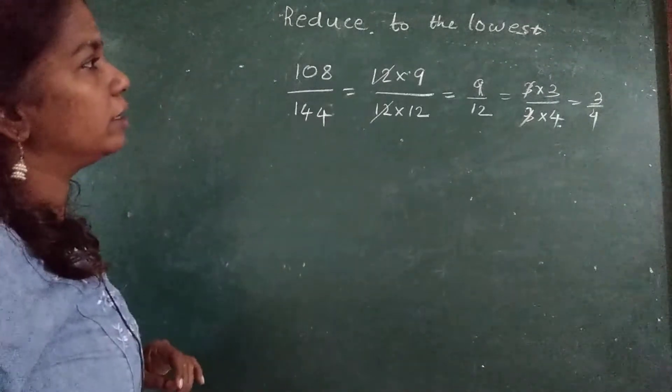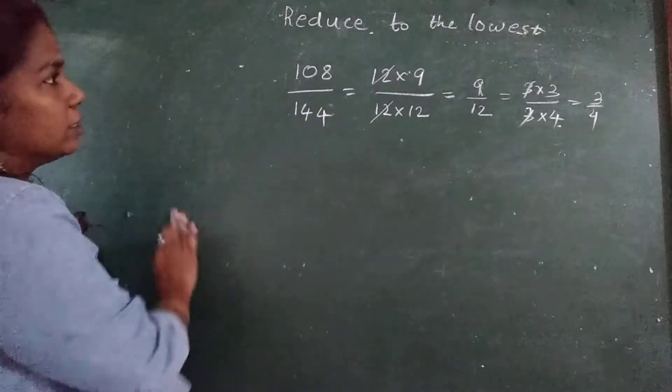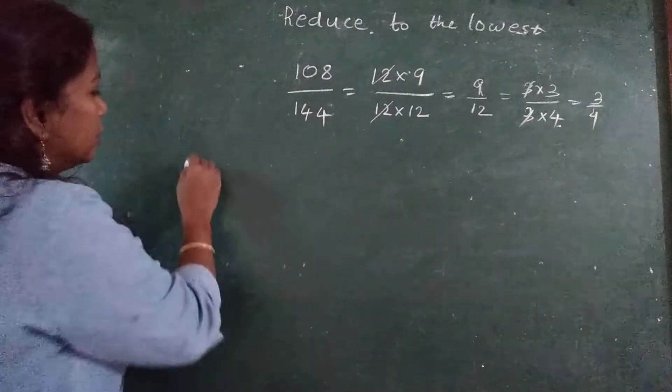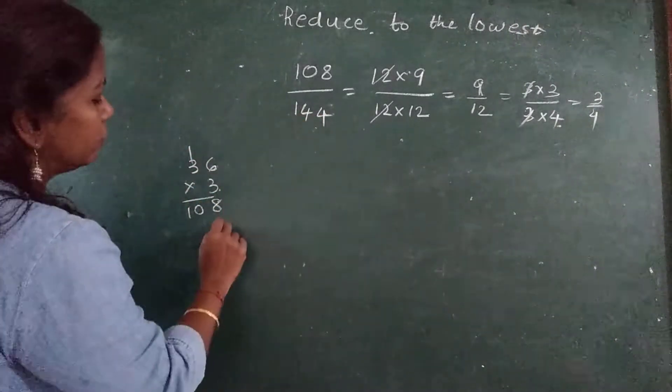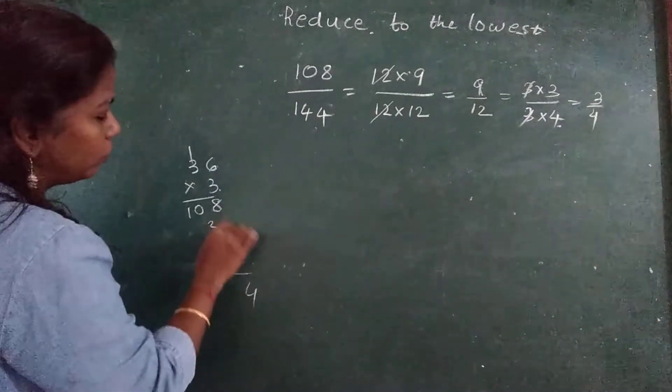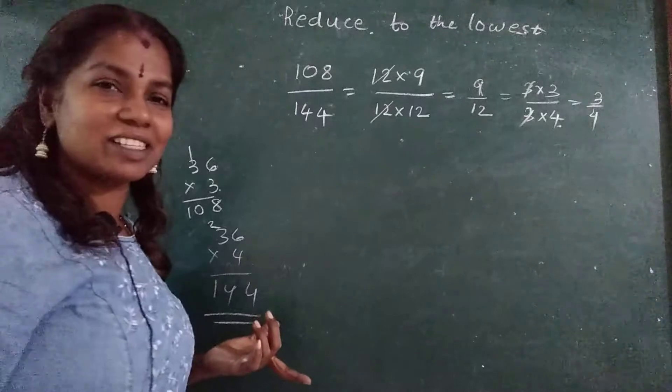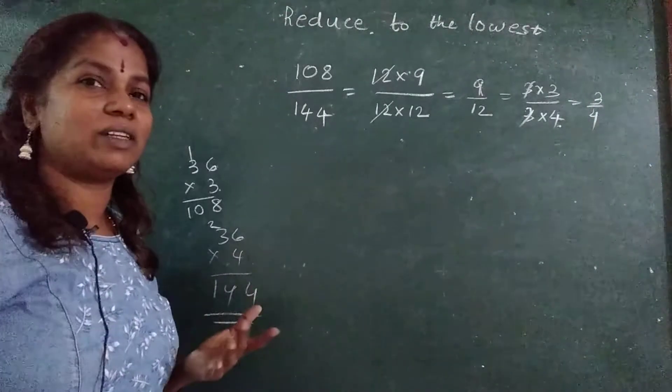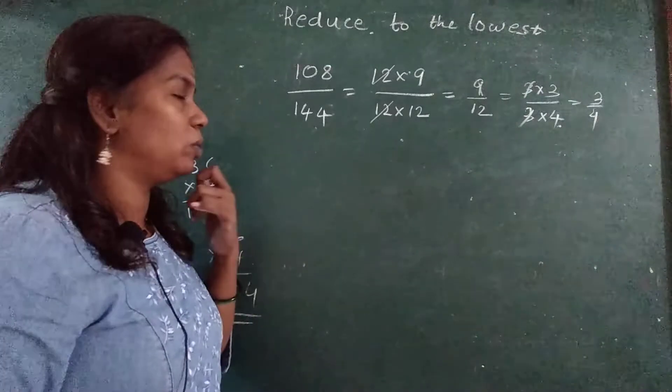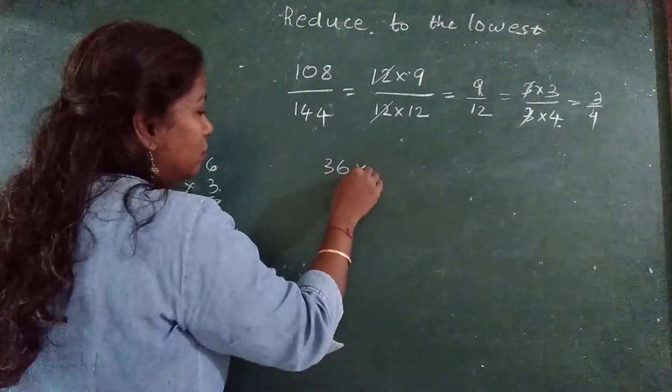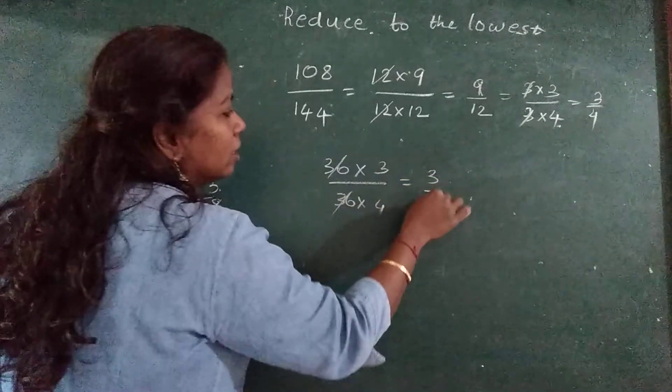Or you can do in one other manner. 12 threes are how much? 12 threes are 36. And 36 threes are 108, and 36 fours are 144. But 36 table, it's not that possible for everyone to study till 36 or till 50 the table. Isn't it? So if in case I may have that idea it may go in 36, means how I will write 36 multiplied by 3 and 36 multiplied by 4. 36, 36 cancel. 3 upon 4.